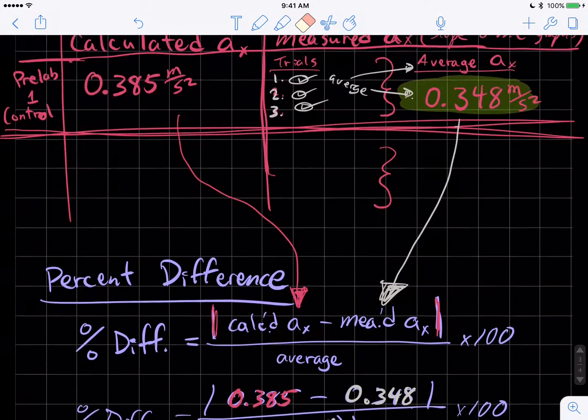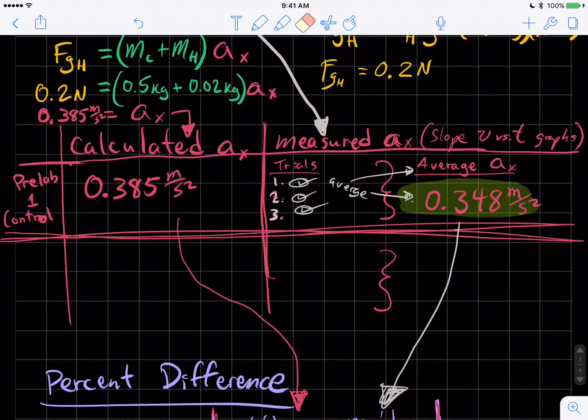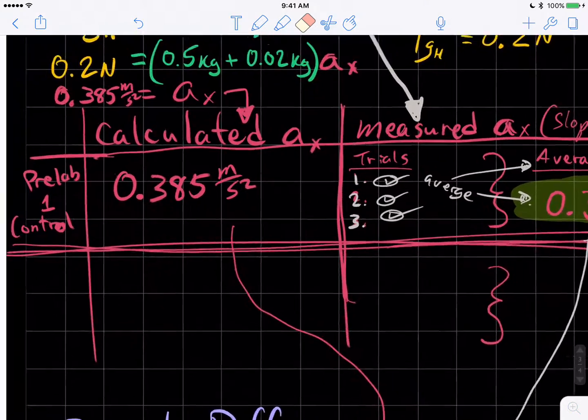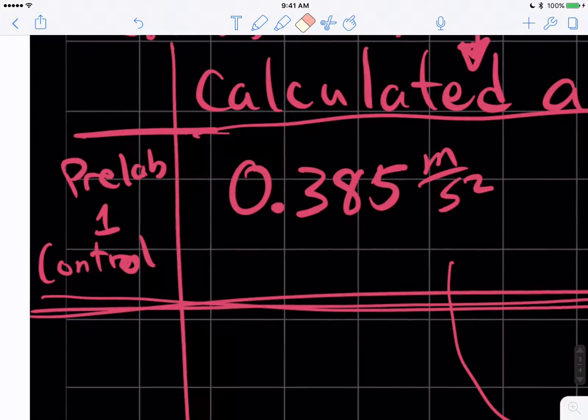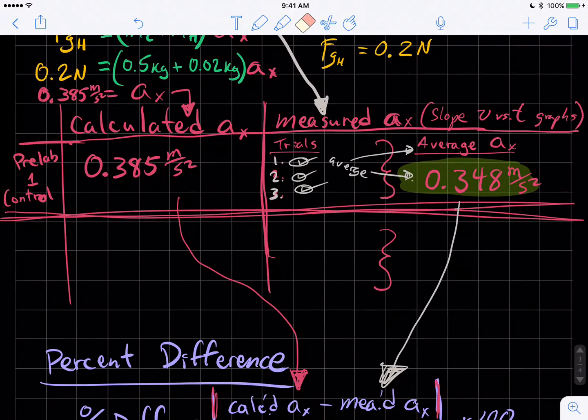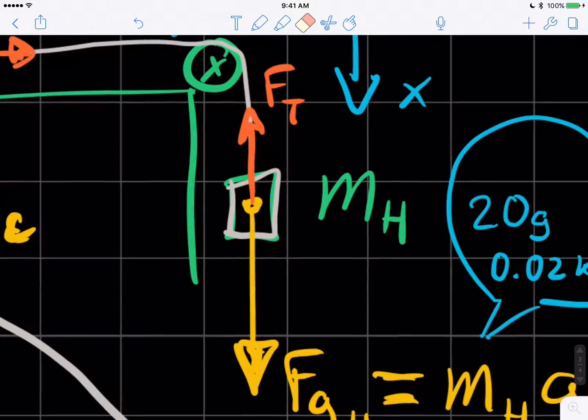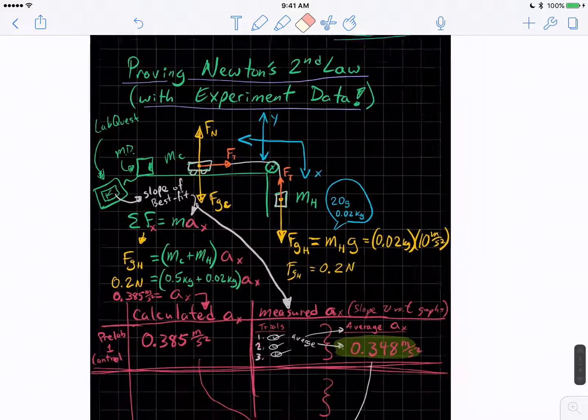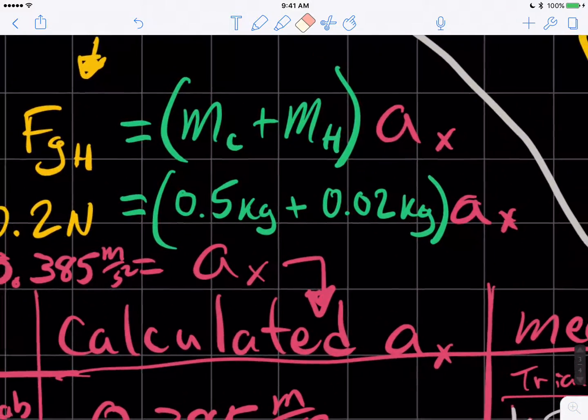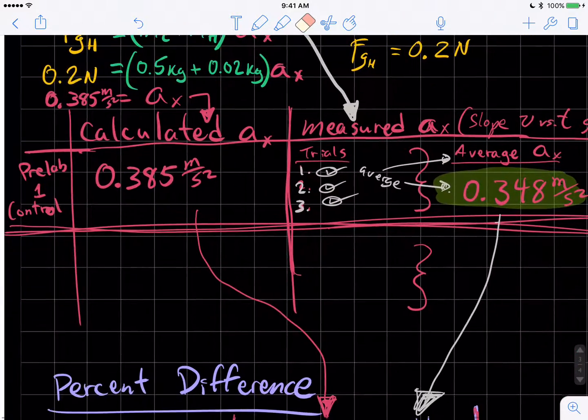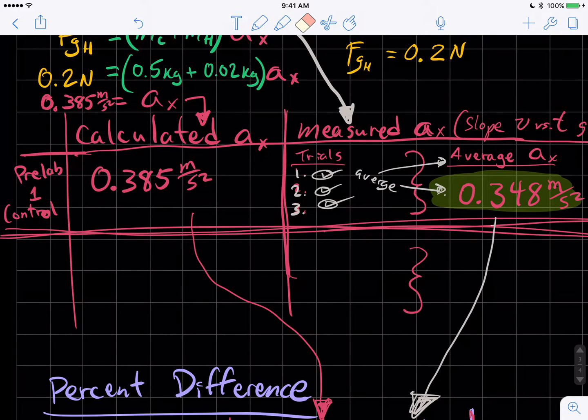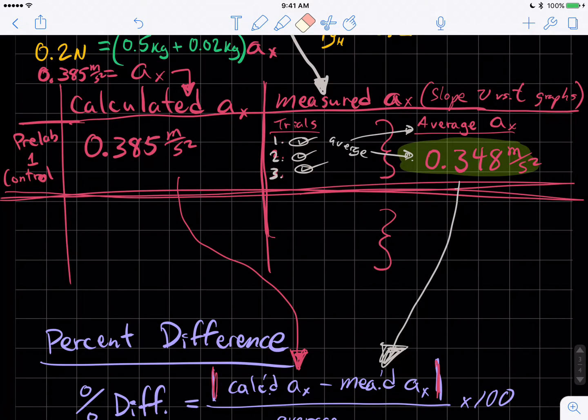And now what you've done is, if you're doing the AP physics one investigation number two, you've just done the pre-lab part one, the control run. And now you're going to add mass for part two A. You're going to add mass to the cart and make MC more. Then you're going to add mass to the hanging mass for part two, part B. And you're going to recalculate these values and predict the new acceleration and then measure that and see if your measured accelerations consistently come out so that Newton's second law consistently is proven true over and over again.